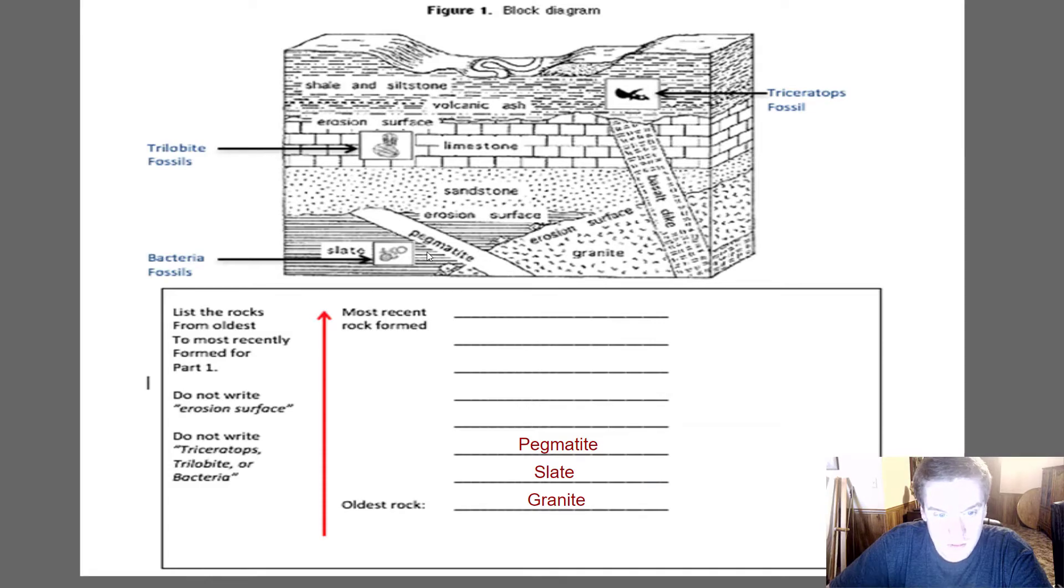The pegmatite cuts through the granite, cuts through the slate, doesn't quite cut through that erosion surface. The sandstone would be after that. This is our horizontal deposition, original horizontality. We know that this layer is on the bottom here of the limestone, so this layer has to come first. Then we have our limestone. This is where we use superposition, the principle or law of superposition. That's traditional marine deposition. We're probably going from a shallow marine environment with sandstone to a deep marine environment. Deep ocean is where you form limestone.